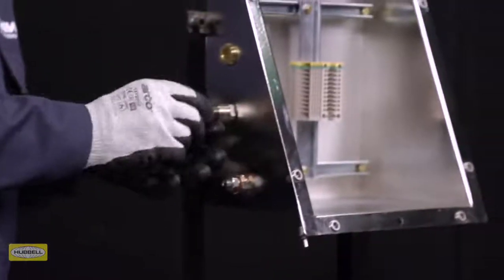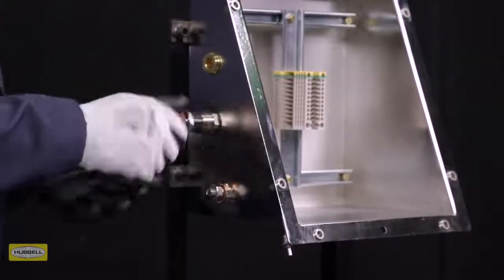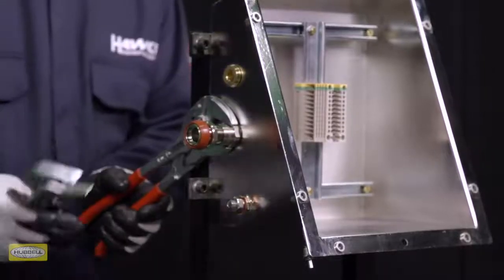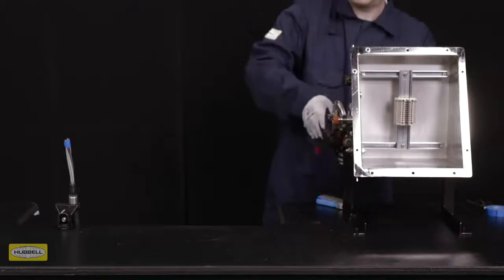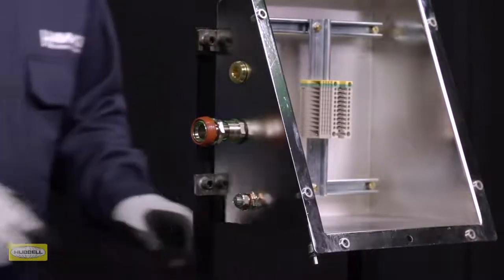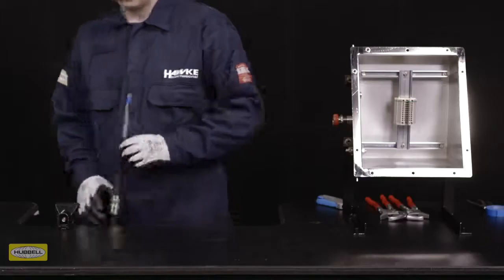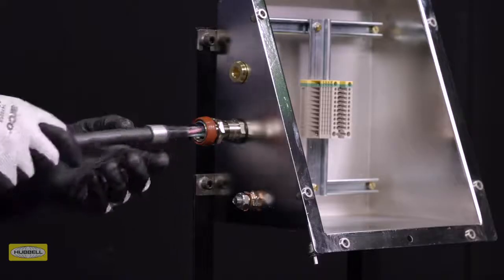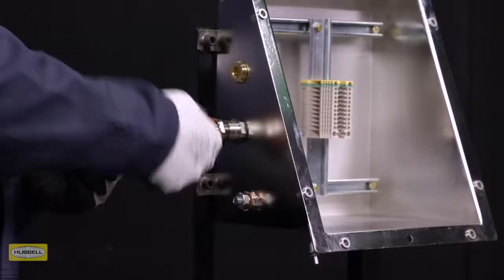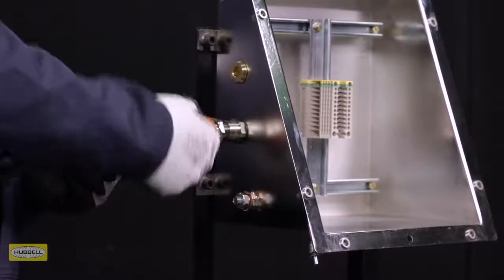If required, fit the appropriate IP washer onto the entry thread. Depending on the enclosure used, the method of installation will vary. Slide the cable through the entry until the pot is seated in the entry. Hand-tighten the middle nuts to the entry and add a fifth to a quarter turn with a wrench.